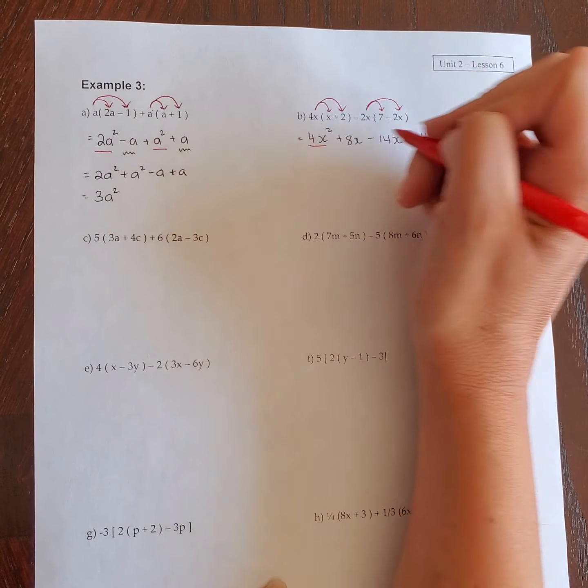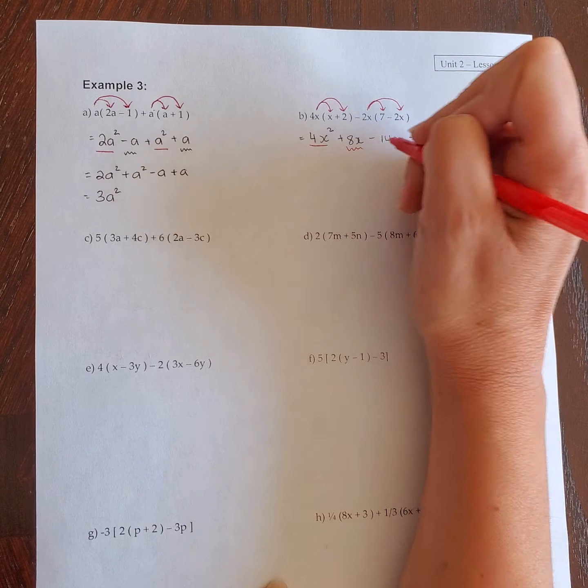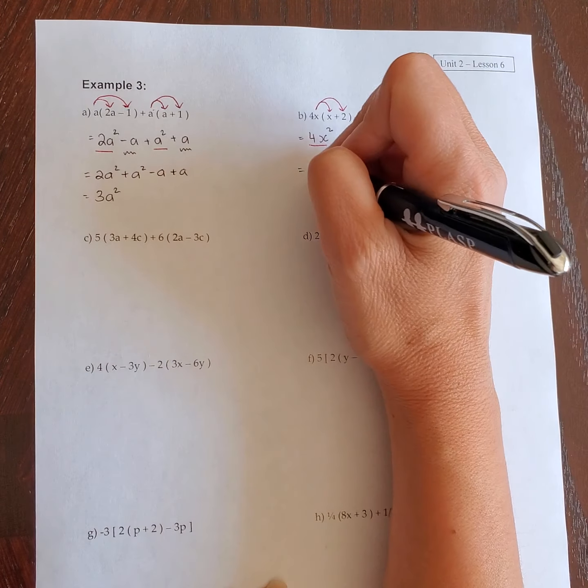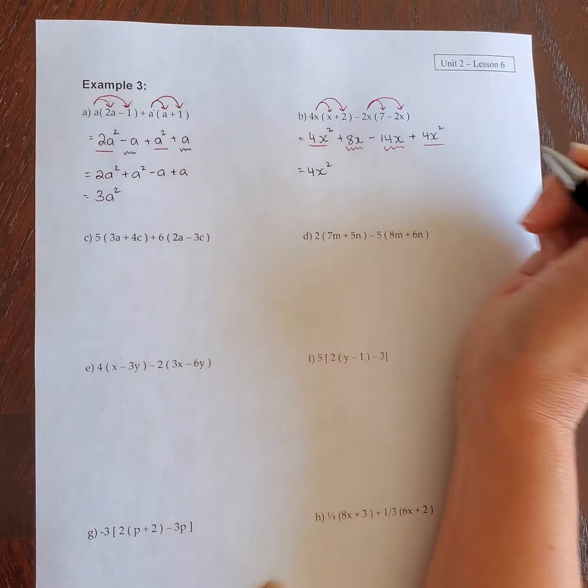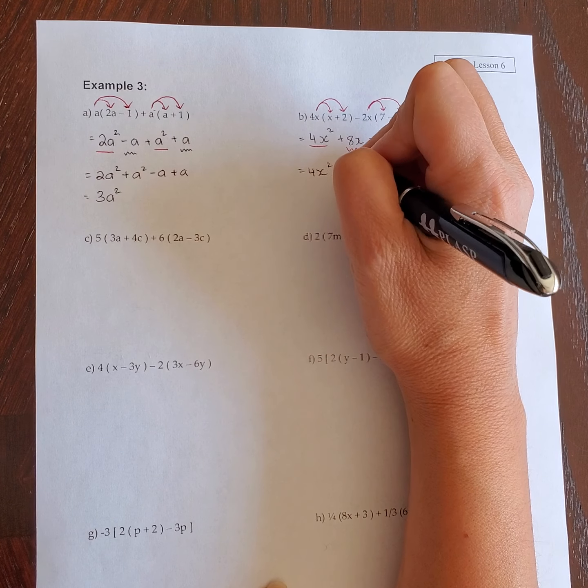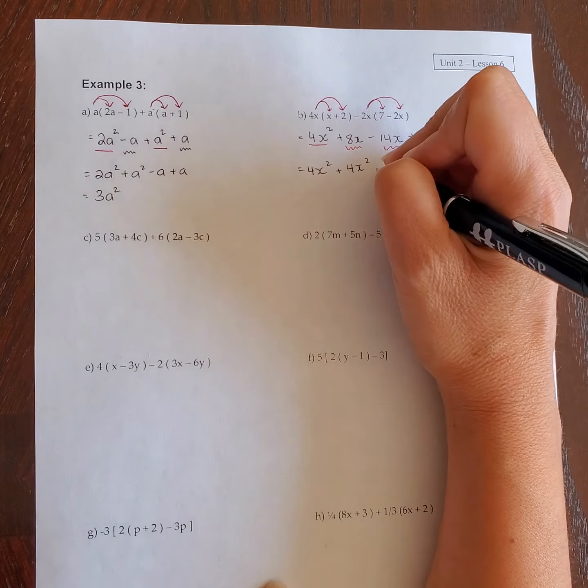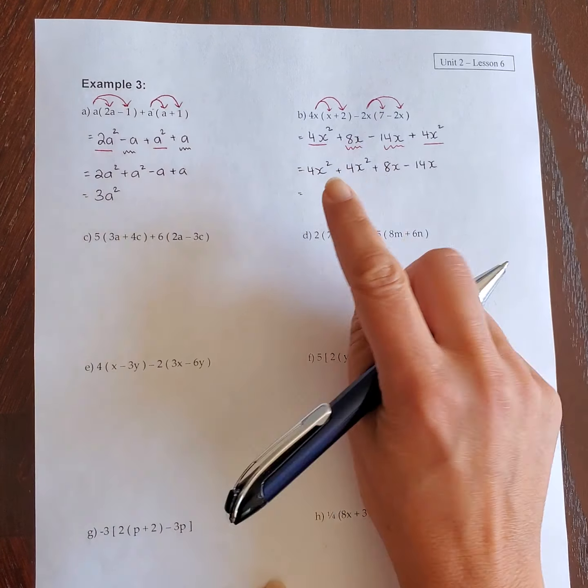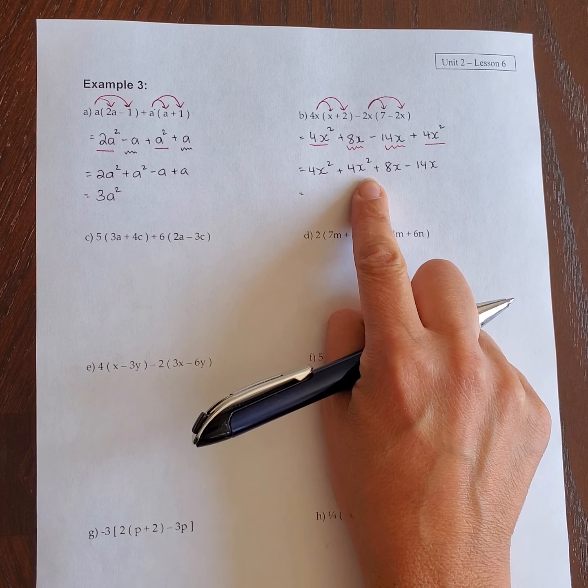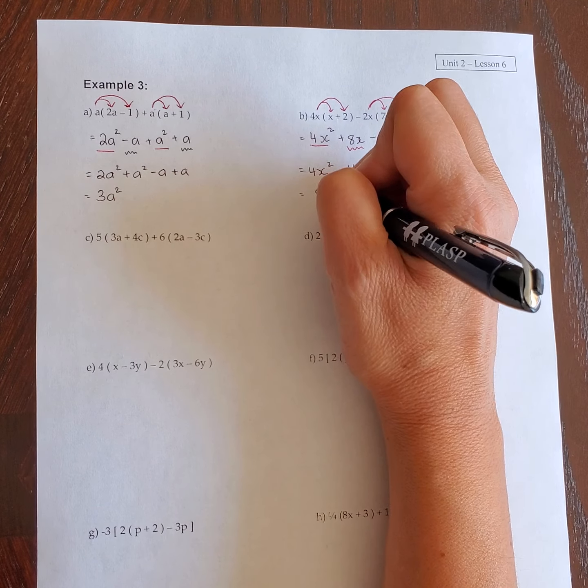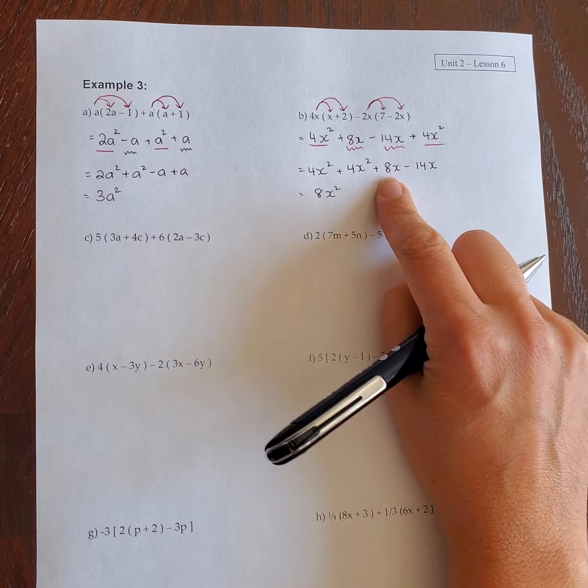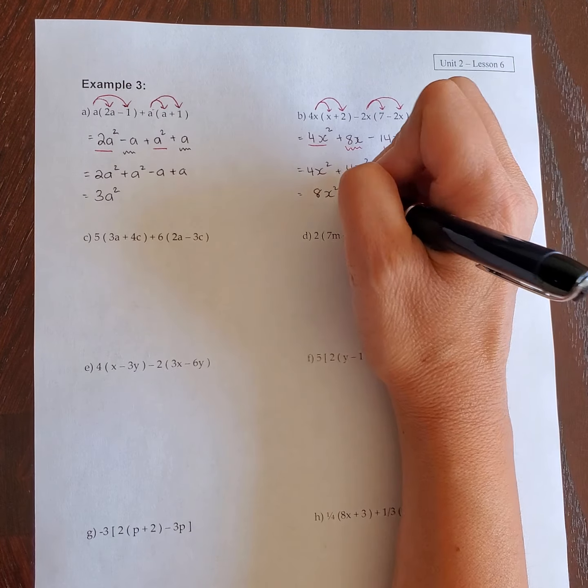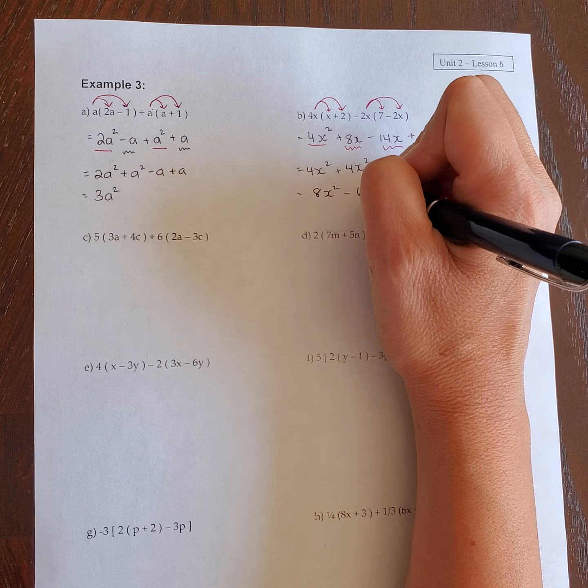Once you've done that, collect your like terms. So x squareds go together, and the x's go together. So 4x squared plus 4x squared plus 8x take away 14x. 4x squared plus 4x squared is 8x squared. Positive 8 take away 14 is negative 6x.